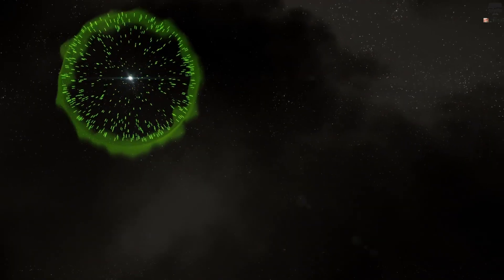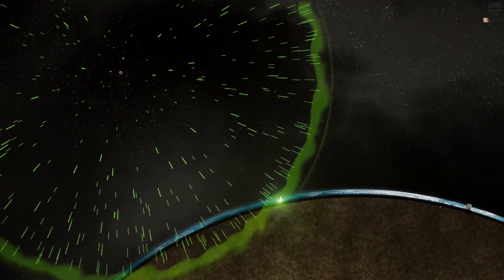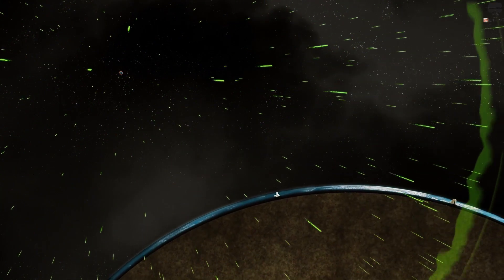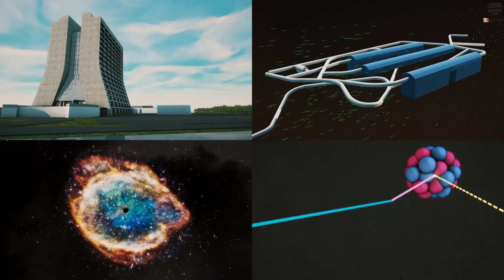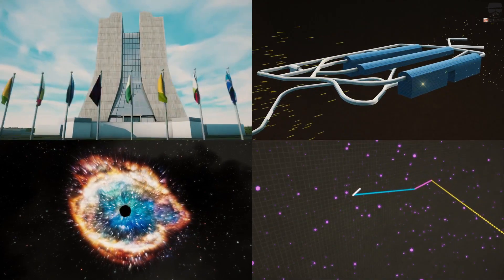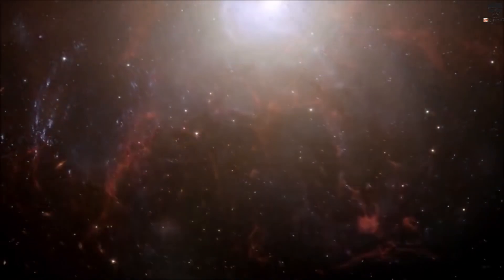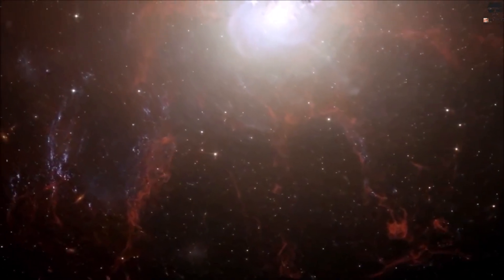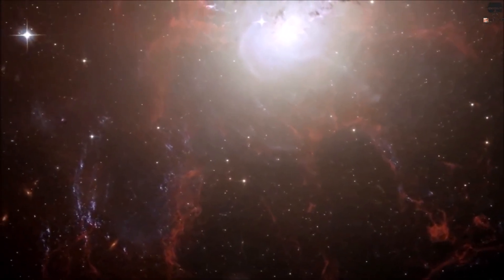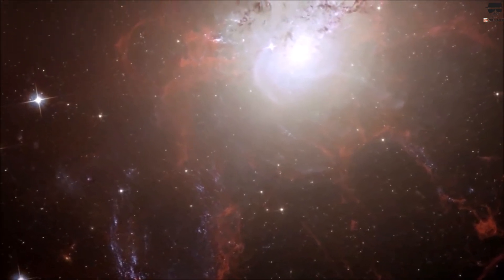If Betelgeuse were to go supernova, our first surefire signature would come in the form of high-energy neutrinos flooding our neutrino detectors all over the world in a burst spanning some 10-15 seconds. There would literally be millions, perhaps even tens of millions, of neutrinos picked up all at once by these observatories.